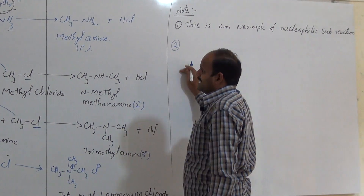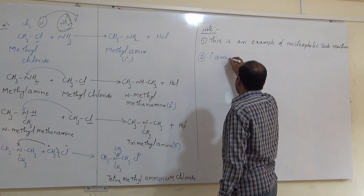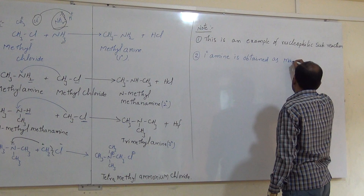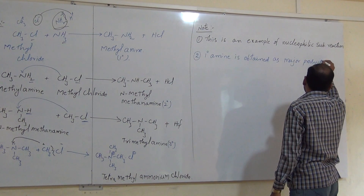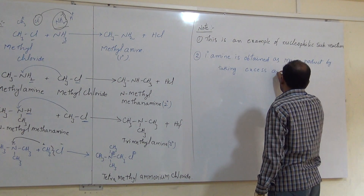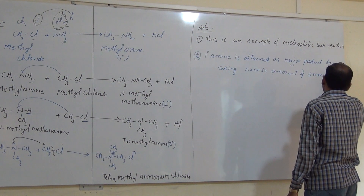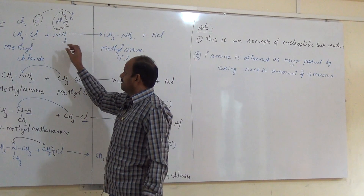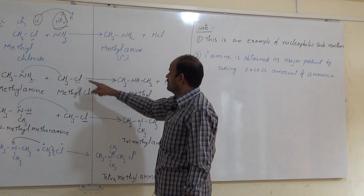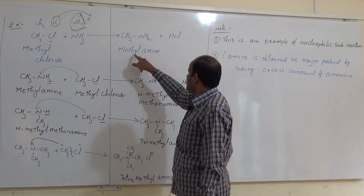If you take a large excess amount of ammonia, then you get methylamine — the primary amine — as the major product. By taking excess amount of ammonia but very less quantity of methyl chloride, in the first step we get methylamine. For the further reaction, methyl chloride is needed. But if there is less methyl chloride and excess ammonia, then you get only methylamine — the primary amine. There is no methyl chloride remaining for further reaction.